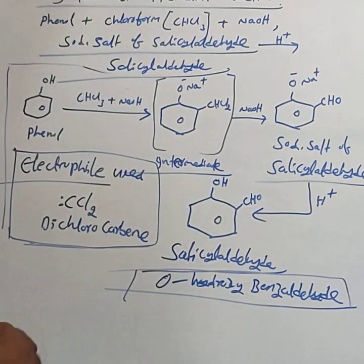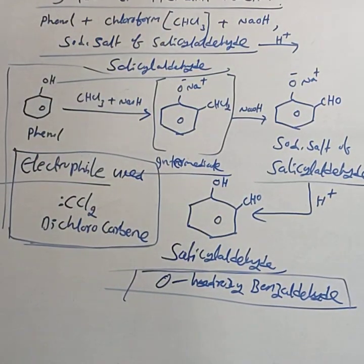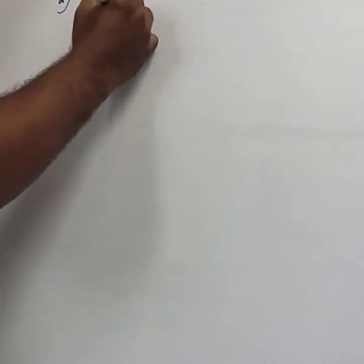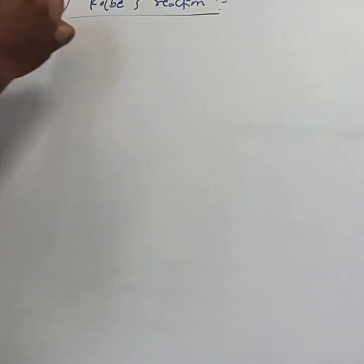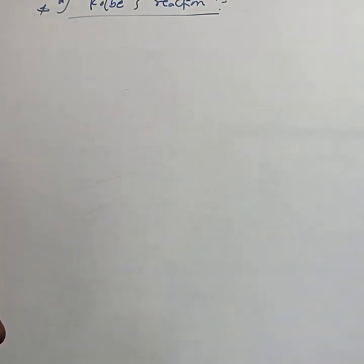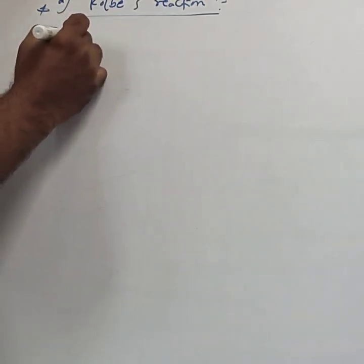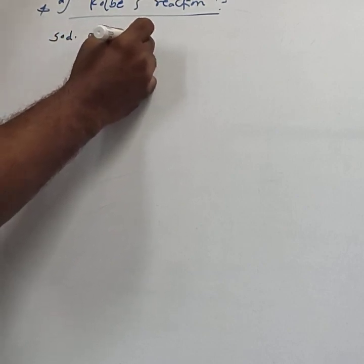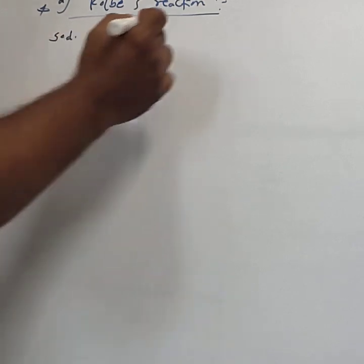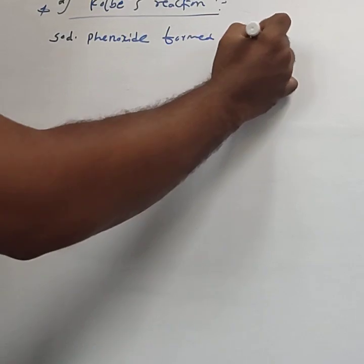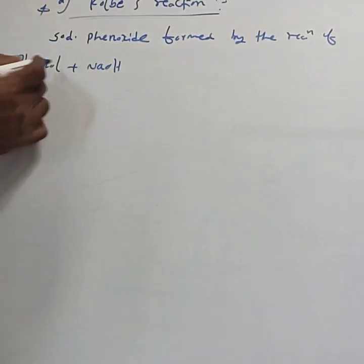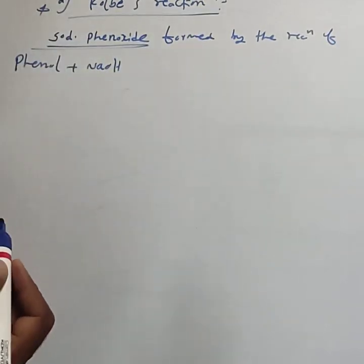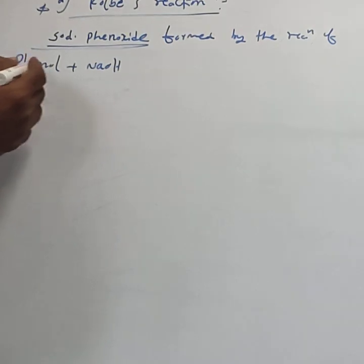Next, consider the Kolbe reaction — the second named reaction. In the majority of papers, they ask the Kolbe reaction. The Kolbe reaction means sodium phenoxide (also called sodium phenate) is formed by the reaction of phenol and sodium hydroxide. When phenol is treated with sodium hydroxide, sodium phenoxide is formed.